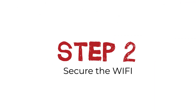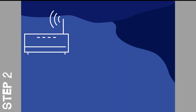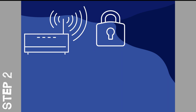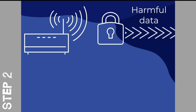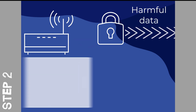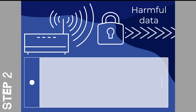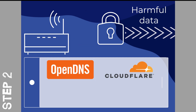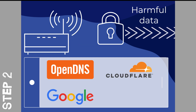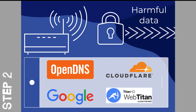Once inside your walls, the data is distributed via a Wi-Fi router. This can be secured with an additional layer of filtering and blocking at the directory name service or DNS level. Step 2 would be to sign up to a cloud-based software solution like OpenDNS, Cloudflare, Google Public DNS or WebTitan.